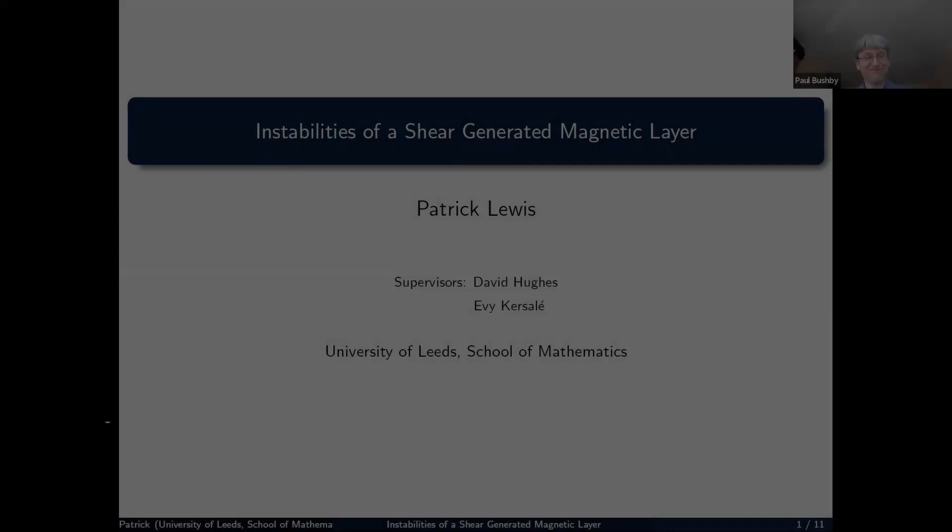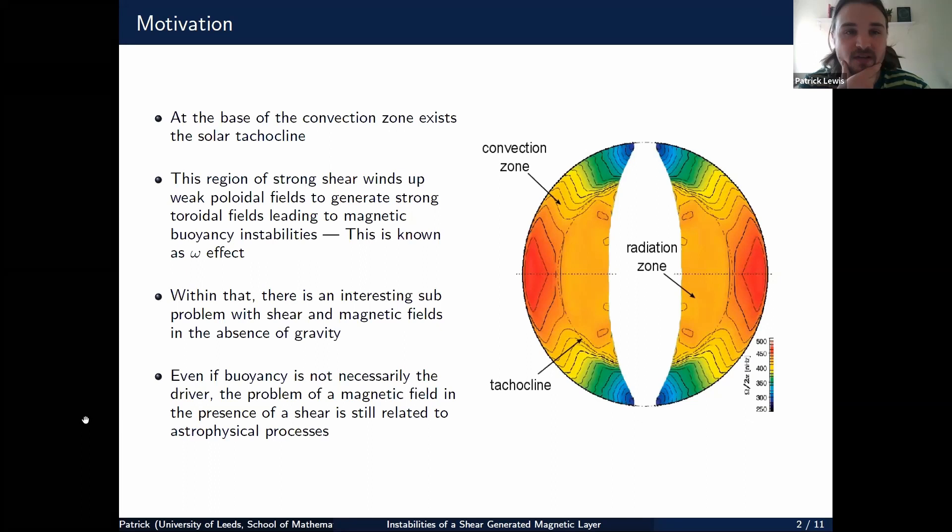Okay, so a few words. My project is really about instabilities in the context of the sun. More particularly, magnetic buoyancy instabilities inside the solar tachocline. But today I'm going to talk about a different problem, motivated by the magnetic buoyancy problem in the solar tachocline, which involves shear magnetic fields in the absence of gravity.